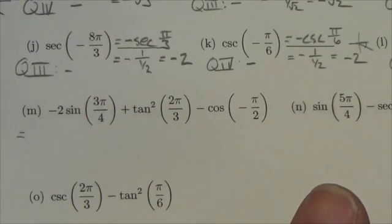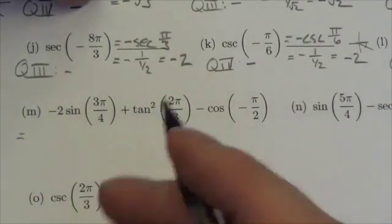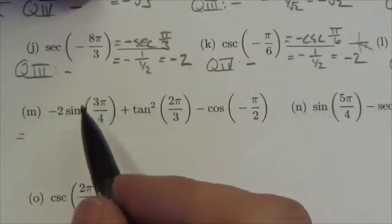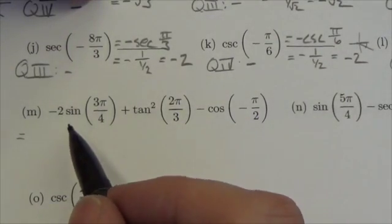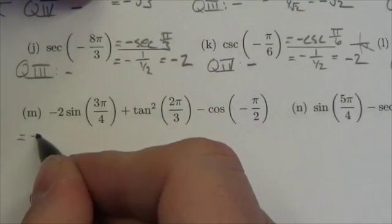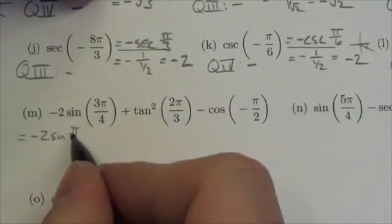What quadrant is 3π/4 in? Well, 3/4 is not quite 1 but it's getting close. If you round that up to 1, this must be in the second quadrant. Sine is positive in the second quadrant. So this is going to be negative 2 times the positive sine of π/4.